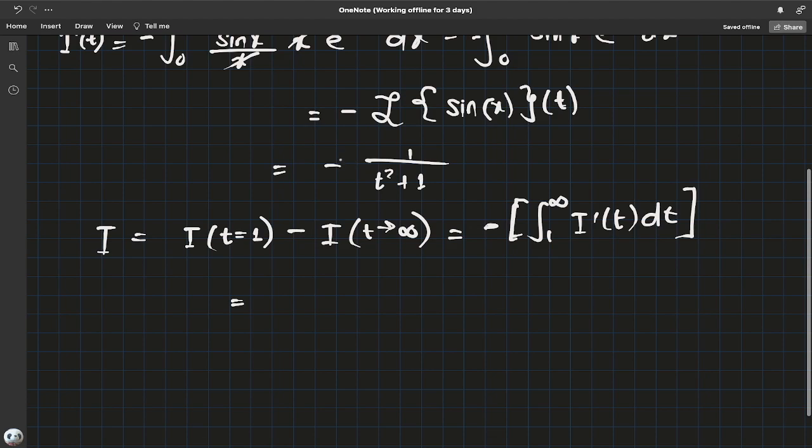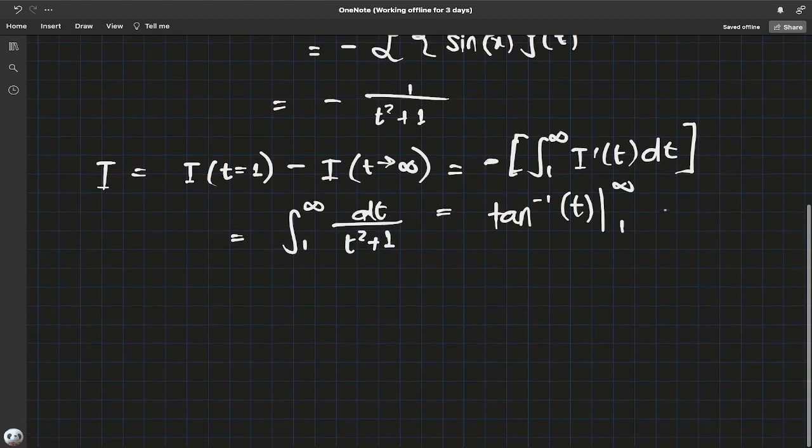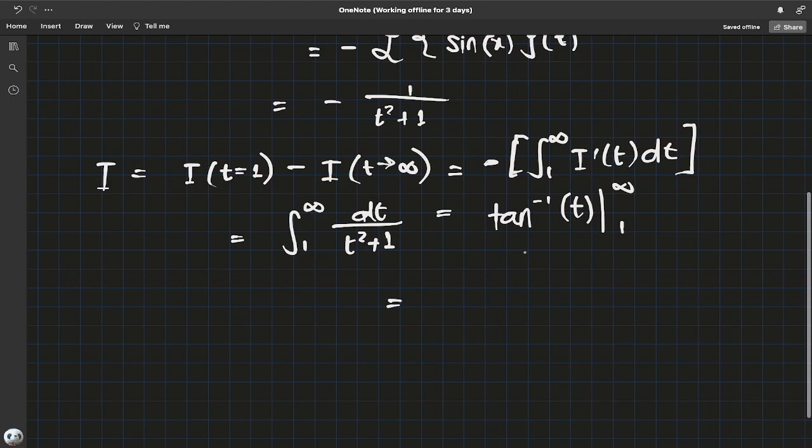So we just have a negative cancel with this: integral from one to infinity of dt/(t^2 + 1). This is pretty simple. We know this is the inverse tangent of t evaluated at one and infinity. So for infinity we have π/2 minus inverse tangent of one is π/4. This just evaluates to π/4, and that is the answer.